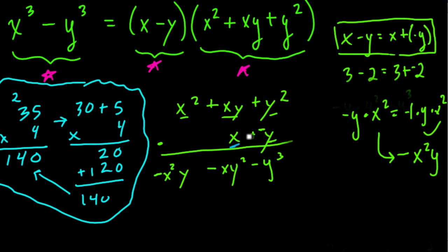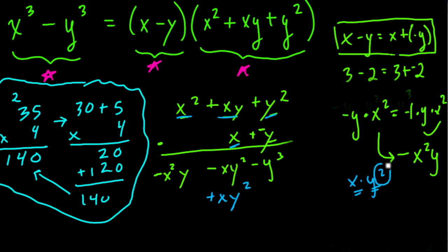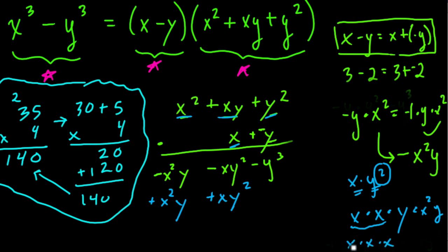Now we move on to multiplying x by all three parts. First, x times y squared equals xy squared — and we place it to match with negative xy squared so terms can cancel. Next, x times xy: x times x times y gives x squared times y, which is x squared y — this matches with negative x squared y. Last, x times x squared: x times x times x equals x cubed.